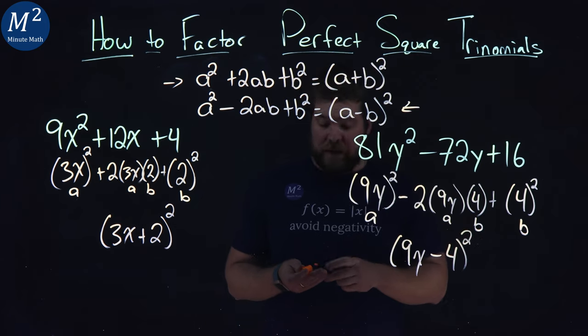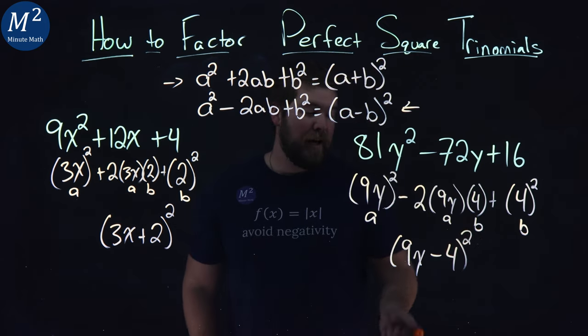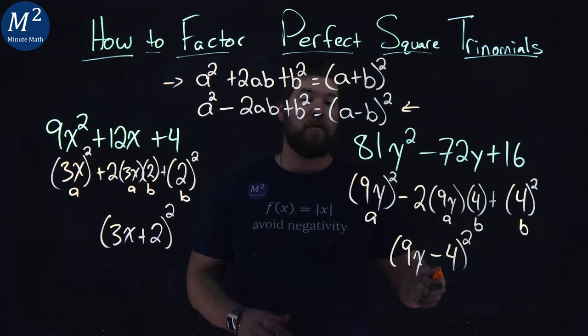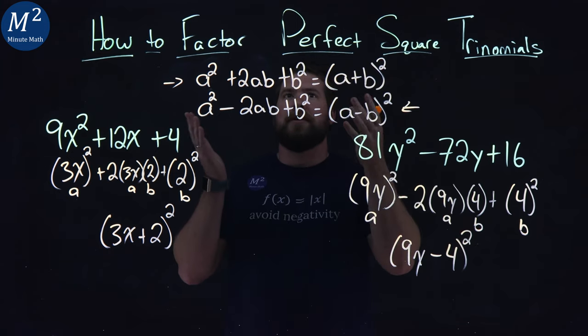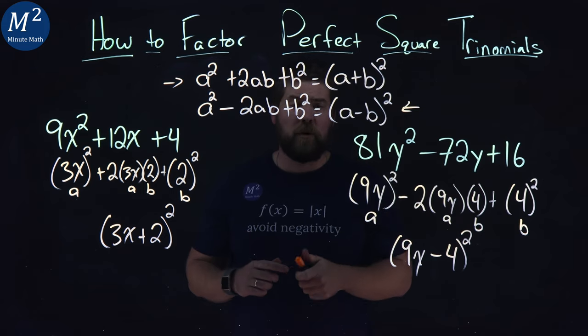And so 81y² - 72y + 16 came out to be (9y - 4)² using our factoring perfect trinomial formula.